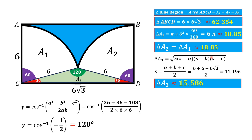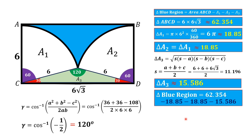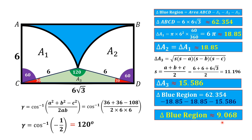Now all the required areas have been found. We substitute all these areas into the equation: blue area = rectangle area − A1 − A2 − A3. Thus the blue area is approximately 9.068 square units. That is the answer.